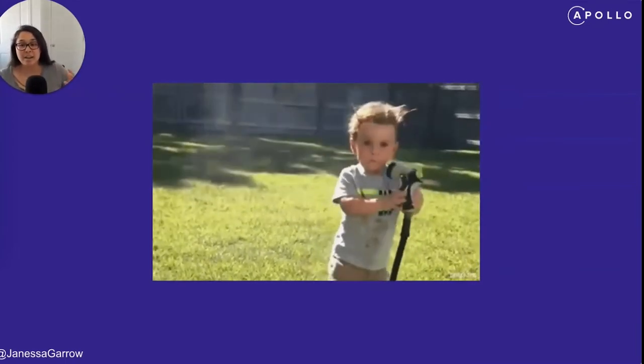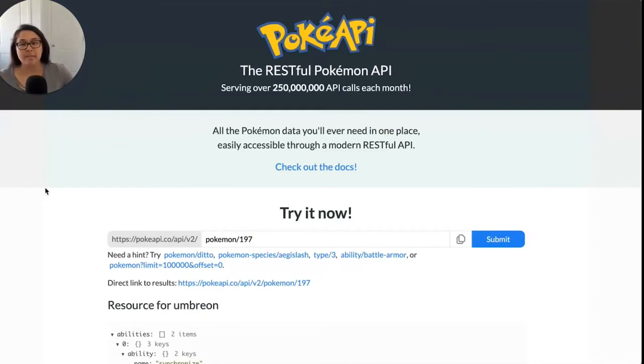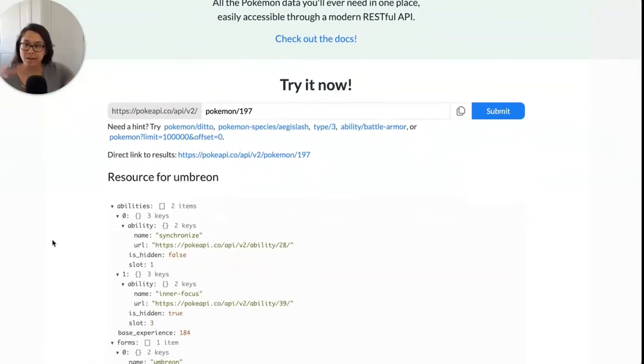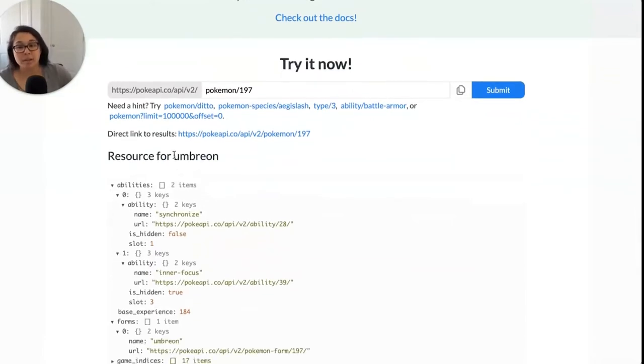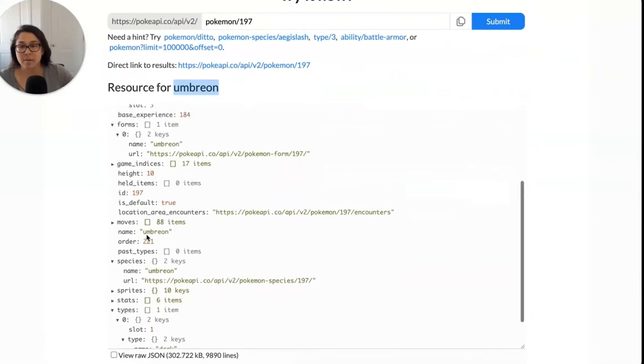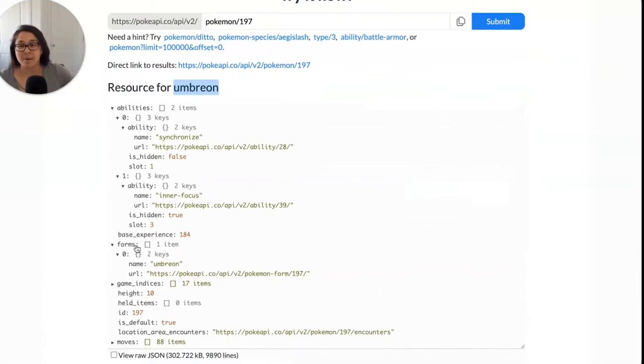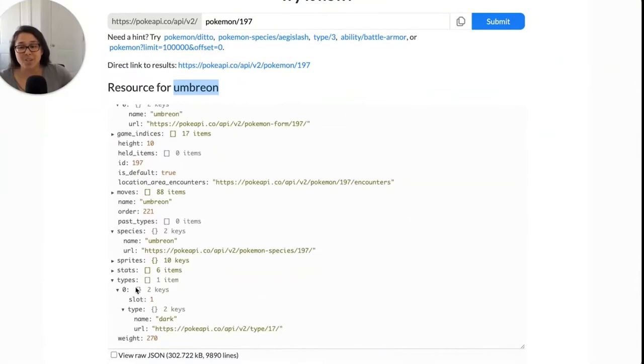So here we have the Poke API, which is a public REST API. We can request a single Pokemon and get information about it. So here we've requested information for one called Umbreon. And this particular endpoint gives us back all of this different data about it. So overfetching would be if we only needed, say, we just wanted the name. Well, when we hit this endpoint, we get everything about abilities, forms, moves. We get all of this extra data, even though we only needed this one name field. So that's potentially a really big payload for a very small data need on the client.